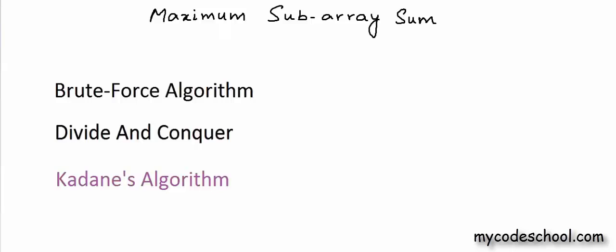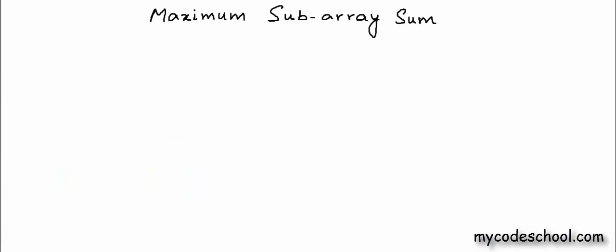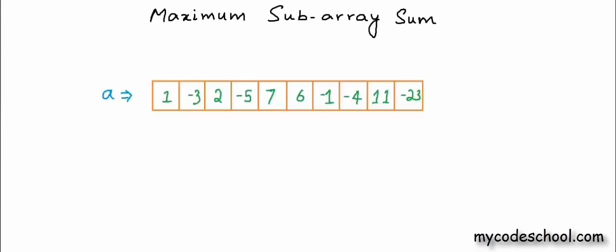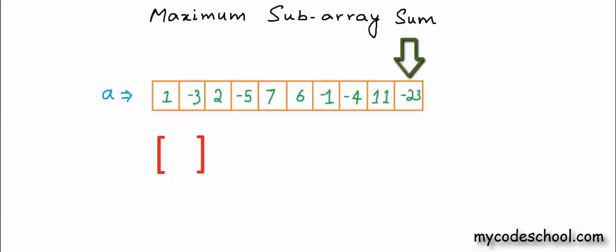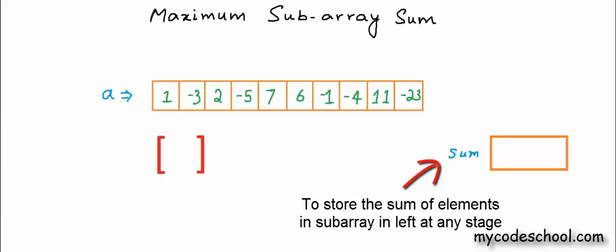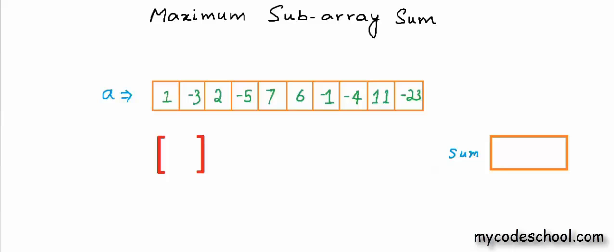We've so far seen 3 techniques for solving this problem. Next, we are going to see an approach called Kadane's algorithm. In this algorithm, we are going to solve this problem in a much simpler manner — just by going through the array once, we will calculate the MSS of that array. We are going to find the MSS of this given array. Initially, we start with an empty subarray. As we keep discovering elements, we will try to add each element to this subarray, and we will also keep track of the sum of this subarray.